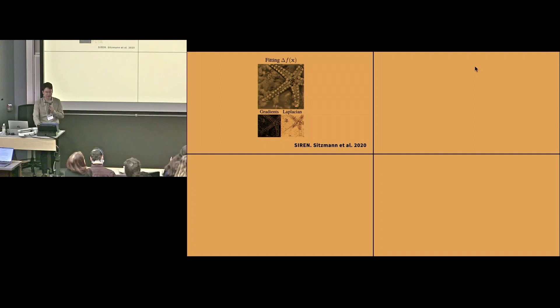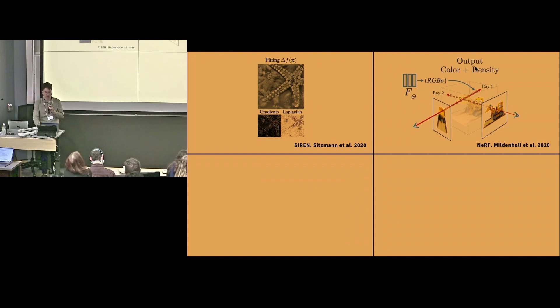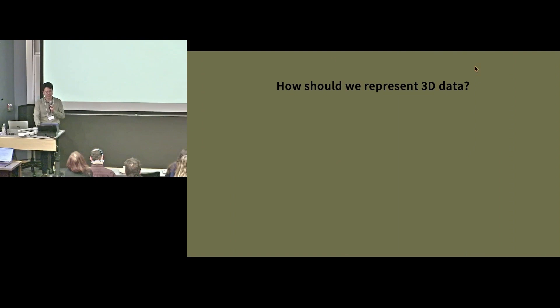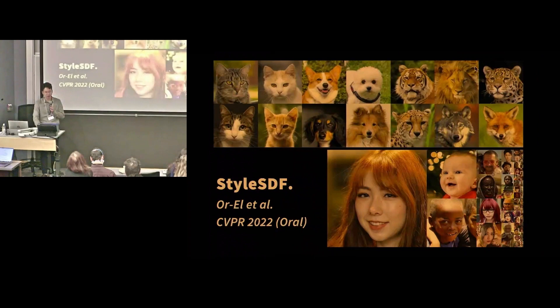This neural implicit representation has been adopted for various domains, including solving differential equations, reconstructing scenes, and modeling biomolecules or black holes. However, many of these methods require 3D data to train. Oftentimes you only have 2D images collected online — millions of single-image instances without multi-view datasets. In our paper SolidNeRF, we tried to train a 3D generative model from these sparse datasets of only 2D images.